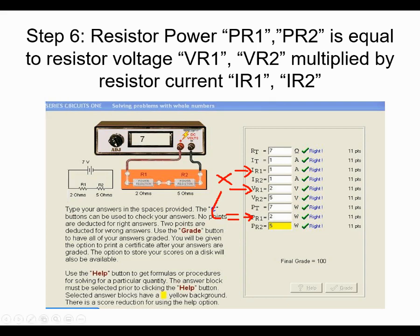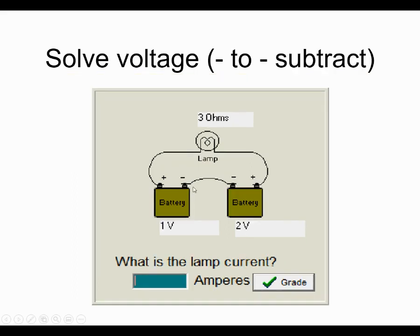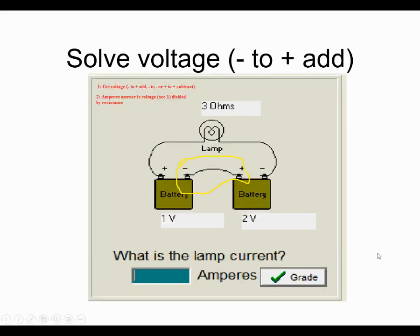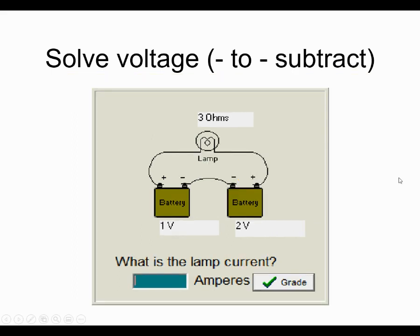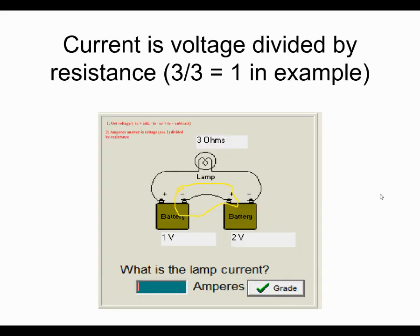Another exercise you're going to be doing series-wise in the Basic Circuits Challenge is series sources. How do you do series sources? It's either going to ask for the voltage or the current. First, you have to see how the batteries are connected. If they're connected negative to positive, the voltages are added. If they're connected negative to negative or positive to positive, the voltages are subtracted. Once you have the voltage, if they're asking for voltage just enter it. But often they ask for current — you figure out the voltage, and in this case negative to positive means you add: 1 plus 2 equals 3. Then you divide by the resistance to get the current.